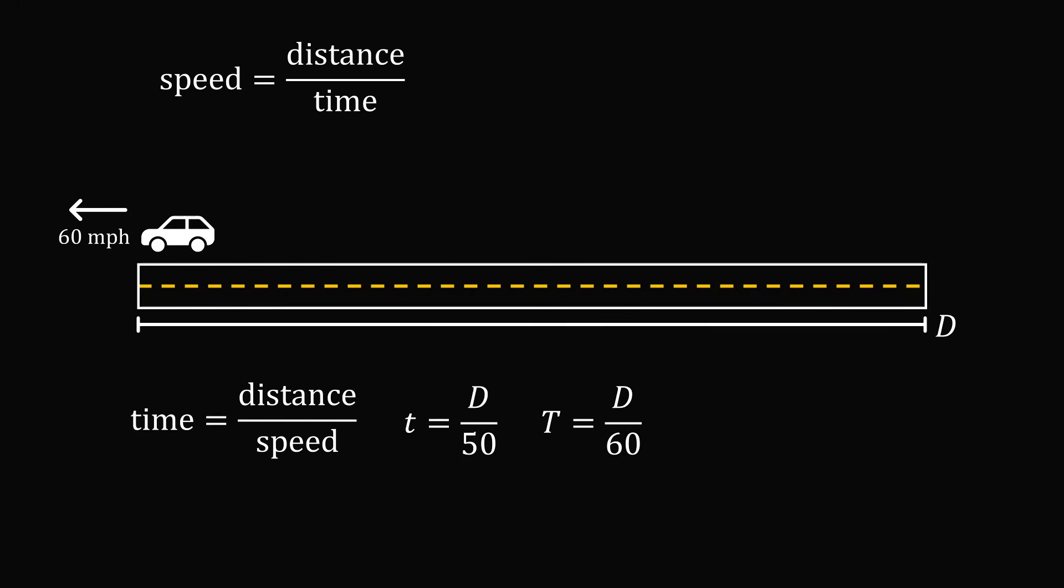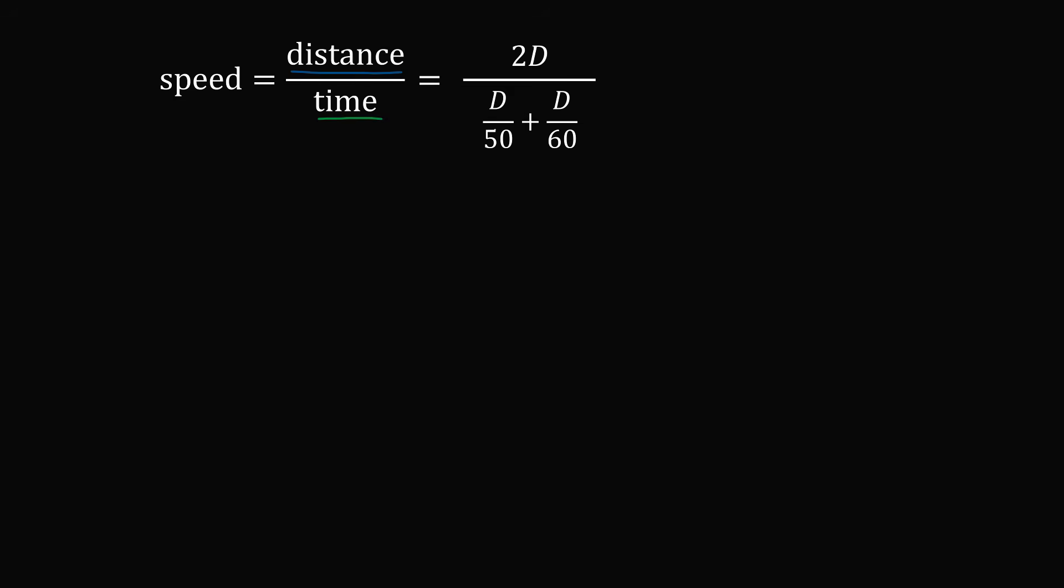Let's calculate the exact amount. We know that speed is equal to distance over time. So what's the total distance for the entire round trip? We travel a distance of d to work and a distance of d back, so the total amount will be equal to 2d. The total time is d over 50 plus d over 60. Let's factor a d from the numerator and the denominator, so these variables will cancel.